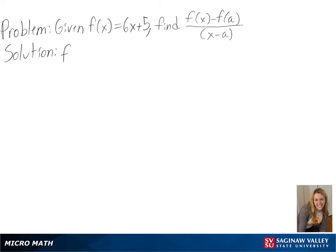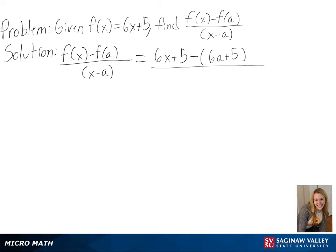Our problem is, given f of x equals 6x plus 5, find f of x minus f of a over x minus a. To find our difference quotient, we will plug in our equation for f of x, and then plug in f of a by substituting a for x.